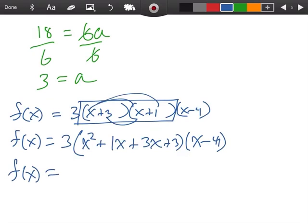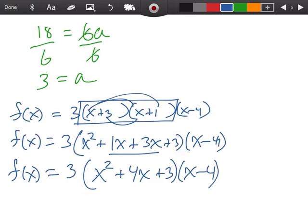Okay. f of x equals 3. We're going to combine those two together. That's x squared plus 4x plus 3 times x minus 4.